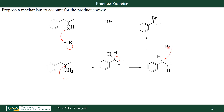Then my bromine anion attacks my carbocation to form my product. I've drawn a squiggly line here, implying that I have a racemic mixture — both an R and an S stereoisomer. That's because in all carbocation reactions, attack can occur from either side to form the stereoisomers. So this is an SN1 reaction.